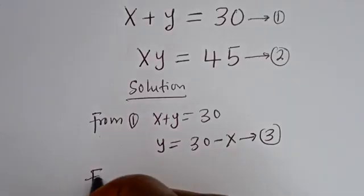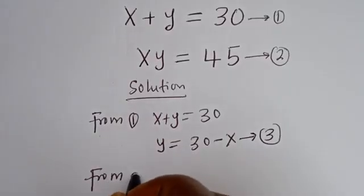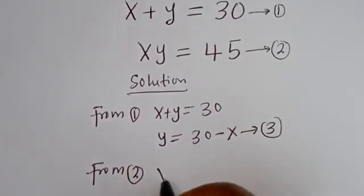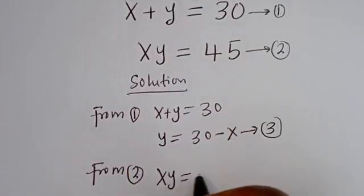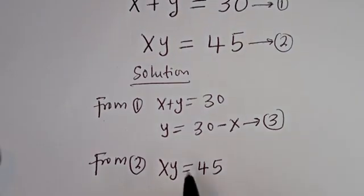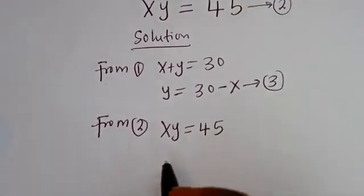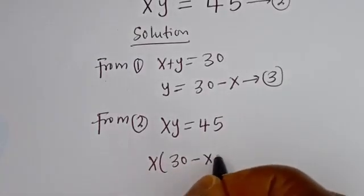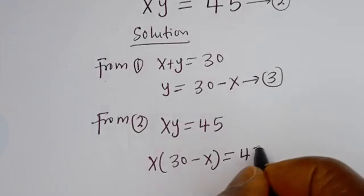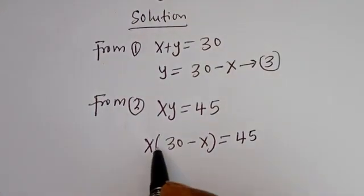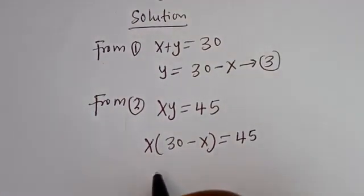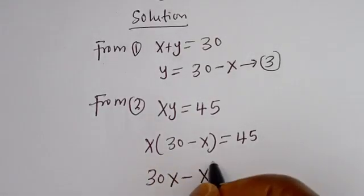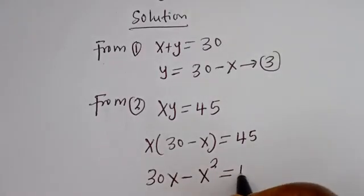Then from equation 2, you can substitute for y here. That is, x times y is equal to 45. When y is equal to 30 minus x, we have x times (30 minus x) is equal to 45. Expanding the brackets: x multiplied by 30 minus x squared is equal to 45, giving us 30x minus x squared is equal to 45.